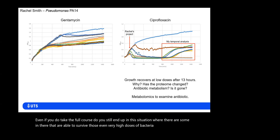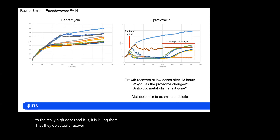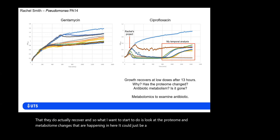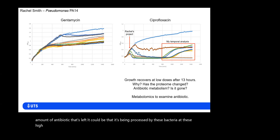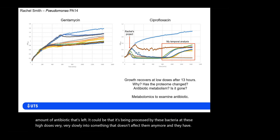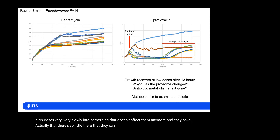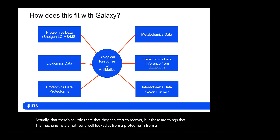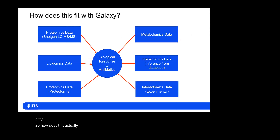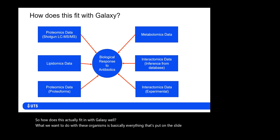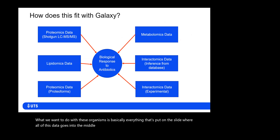These bacteria do actually recover even at very high doses. What I want to start to do is look at the proteome and metabolome changes that are happening. It could be as simple as measuring the amount of antibiotic left, or that it's being processed by these bacteria at high doses very slowly into something that doesn't affect them anymore, until there's so little left that they start to recover. These mechanisms are not really well-studied from a proteome and metabolomics point of view. So how does this fit with Galaxy? We want to take all of this data — everything on the slide — and put it into the middle to figure out the total biology of the organism in response to antibiotics.